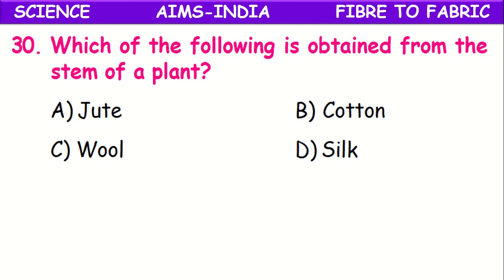Which of the following is obtained from the stem of a plant? Certain plant fibers are obtained from the stem of the plant, like jute and flax. In the given options, jute is obtained from the stem of the plant. Cotton is from its fruit, wool is from the hair of animals, and silk is from the silkworm. So jute is the correct answer.